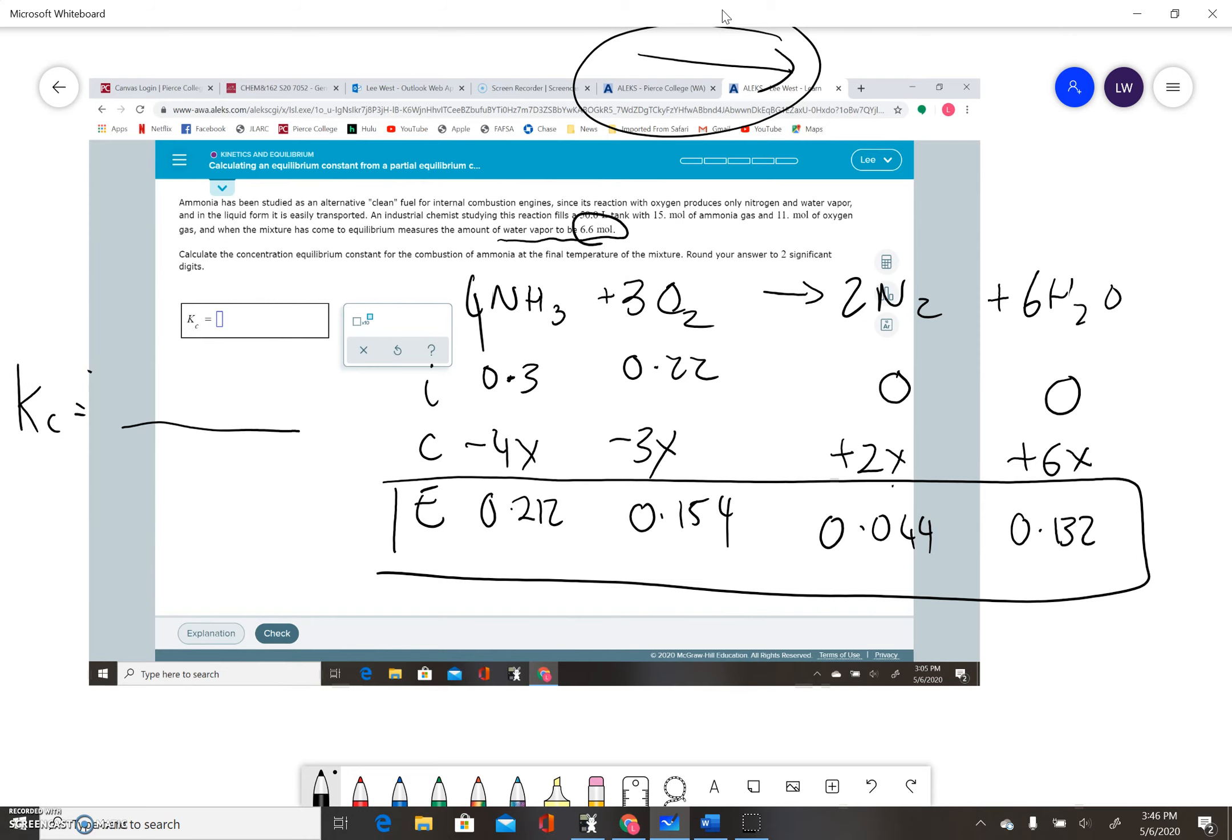Let's think about the Kc expression—it's products over reactants as normal. It's going to be the water concentration raised to the power of 6 times the N2 concentration squared, divided by the ammonia concentration to the power of 4 times the O2 concentration cubed. I've just got to be careful not to make an error.